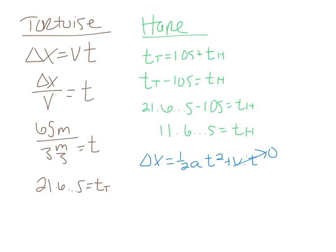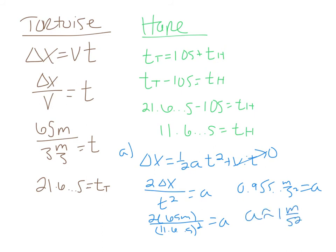Delta X equals one half A T squared plus V initial T. V initial was zero. Looking for acceleration, so this is part A. Looking for acceleration, I'm going to isolate the A. So, two delta X over T squared equals acceleration. Two times 65 meters divided by my unrounded number, eleven point six keeps on going seconds. This is why it helps to have it stored. Squared equals A. Two times 65 divided by eleven point six squared gives me zero point nine five five keeps on going meters per second squared for acceleration. This is only one sig fig, so the acceleration of the hare is approximately one meter per second squared.